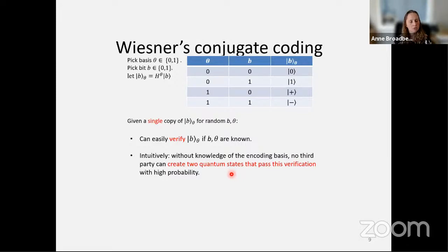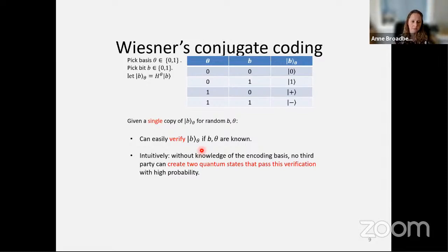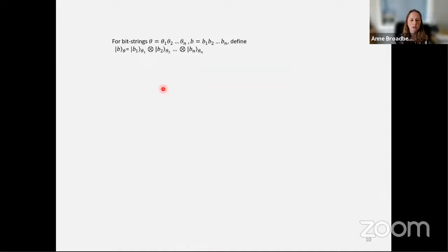The intuition is that if we have no knowledge of the encoding basis, then no third party could create two quantum states that both pass this verification with high probability. So if you don't know basis theta and you have a single copy, it's not possible in general to create two copies both accepted with high probability. For notation: if theta is a bit string of n bits and b is a bit string of n bits, we have n conjugate coding states as a tensor product, also called b_theta.